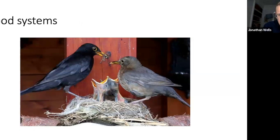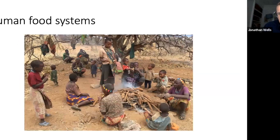I'm going to focus on food systems, which aren't unique to humans — this image shows two parents cooperating to provide food for offspring. If we think about human food systems from a long-term evolutionary perspective, for most of our history we were hunters and gatherers, so we can learn a lot by looking at modern-day hunter-gatherer populations and how their societies as food systems relate to their health.